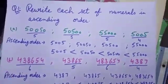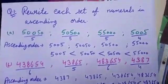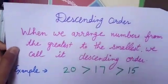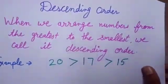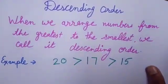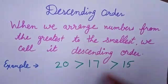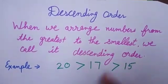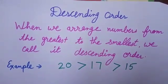Now come to the descending order. Descending order: when we arrange numbers from the greatest to the smallest, we call it descending order. It is the opposite of ascending order.